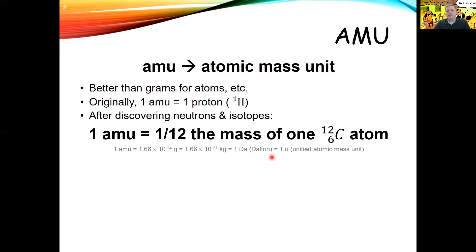A Dalton is essentially the exact same thing as an AMU. It's named after a scientist named Dalton, who spent a lot of time studying mass. In some fields they use the term AMU; in others they use the unified atomic mass unit described as a U. But an AMU, a Dalton, and a U are actually all exactly the same thing — all equal to 1/12 the mass of a carbon-12 atom.